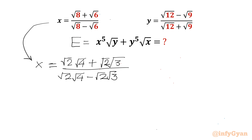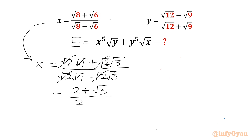Now root 2 is common from numerator as well as denominator, so we will be cancelling it. Root 4 is 2, so the simplified form is 2 plus root 3 over 2 minus root 3.